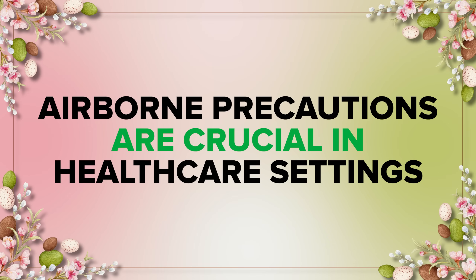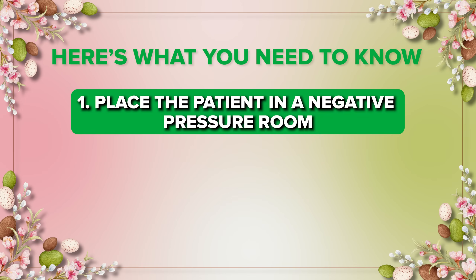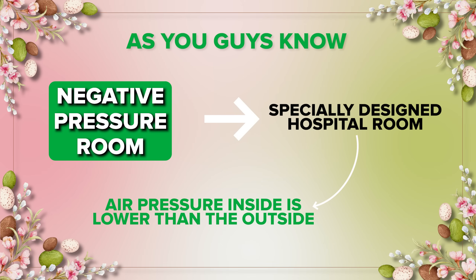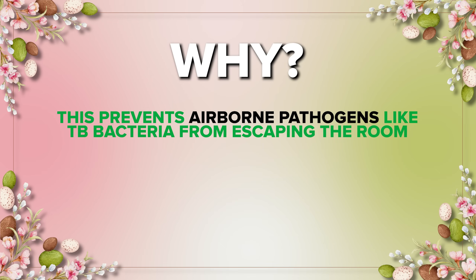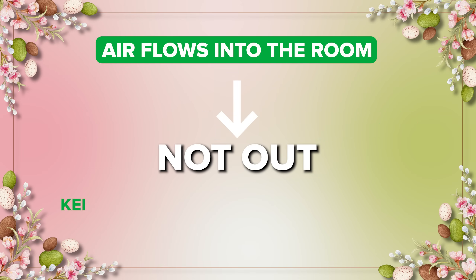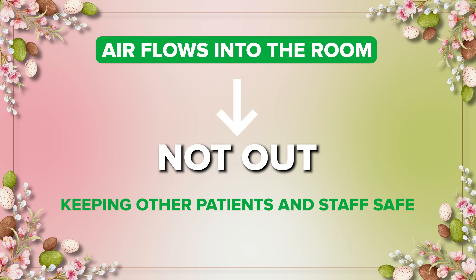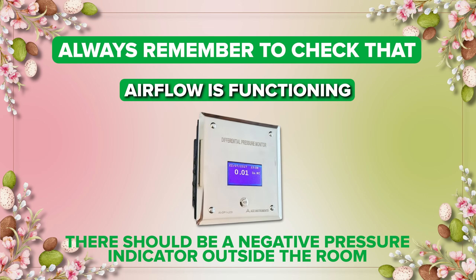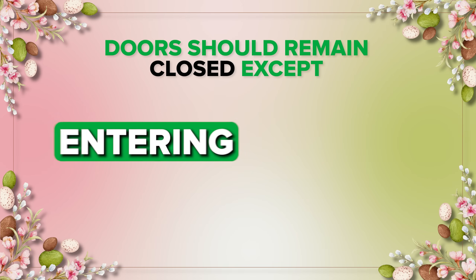Since TB spreads through the air, airborne precautions are crucial in healthcare settings. Number one: place the patient in a negative pressure room. A negative pressure room is a specially designed hospital room where the air pressure inside is lower than the outside. This prevents airborne pathogens like TB bacteria from escaping the room — air flows into the room, not out — keeping other patients and staff safe. Always check that airflow is functioning; there should be a negative pressure indicator outside the room, and doors should remain closed except when entering or leaving.